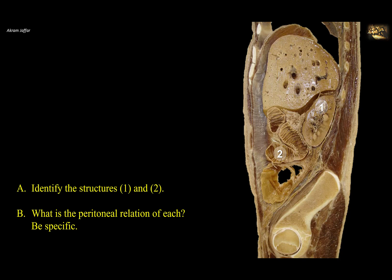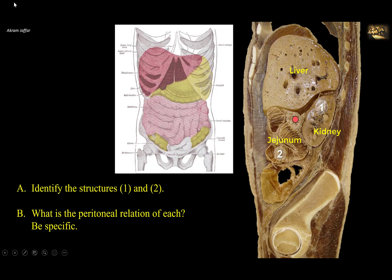This is a parasagittal section of the body showing the abdomen, more deviated to the right. You can see the liver — the big right lobe. Behind the liver, posteriorly, is a section of the kidney; you can see the cortex, medulla, and medullary pyramids. So number one is the kidney. Number two is the loops of small intestine — you can tell by the presence of the plicae circularis. They most likely represent the jejunum, or could be the beginning of the ileum. It is not the duodenum, which would be more posteriorly and superiorly located at this position.